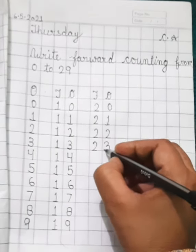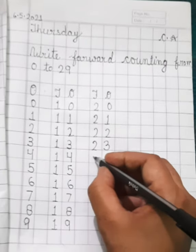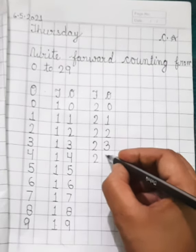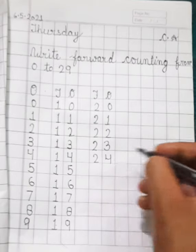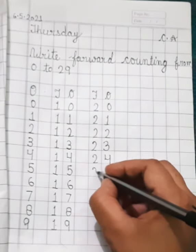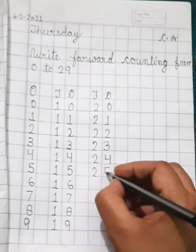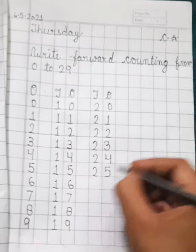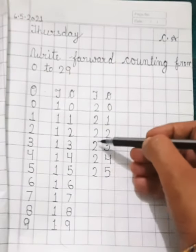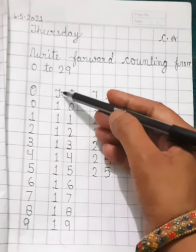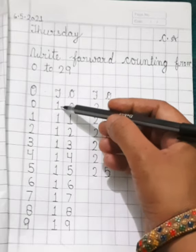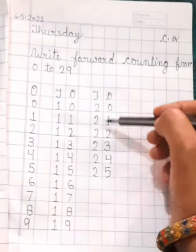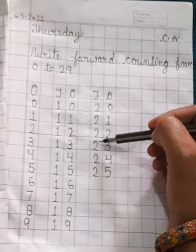Waha hai twenty. Twenty ka member hai three, twenty three. Now twenty ka member twenty four, then twenty five. Ab humare tens ke place par kya aagya hai? Twenty. In this line tens ke place par kya hai? Ten. Aur yahaan par tens ke place par kya hai? Twenty.